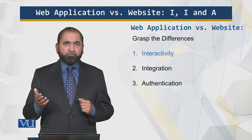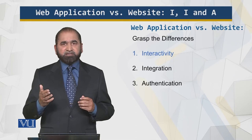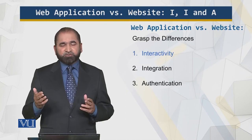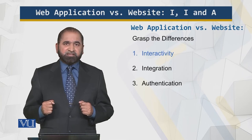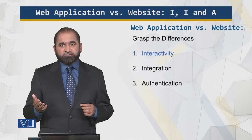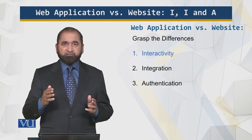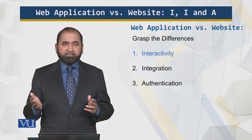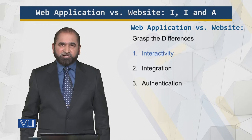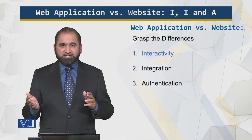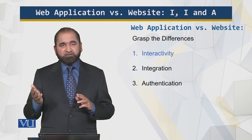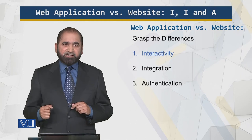Consider a social media website: I can set parameters and get news feeds, chat information, and other messages — that is interactivity. In today's web environment, there are hardly any websites which are non-interactive. So interactivity exists in both websites and web applications. The difference is that for a website, interactivity is not a core requirement, whereas for a web application, interactivity is a core, critical requirement.